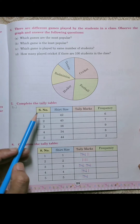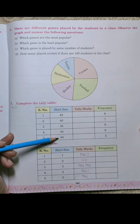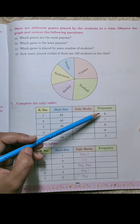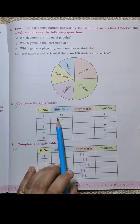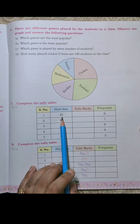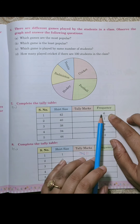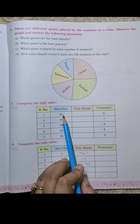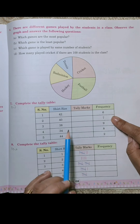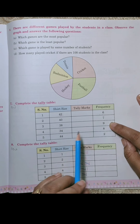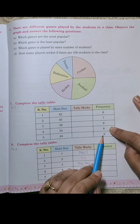The table has four columns: serial number, shirt size, tally marks, and frequency. To read this table — size 42 shirts repeat a certain number of times, size 34 shirt repeats 8 times, and size 44 shirt repeats 2 times.